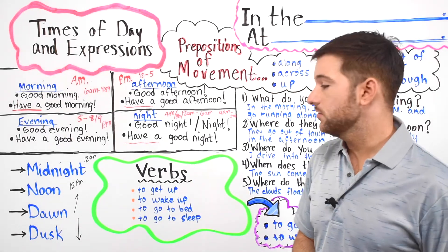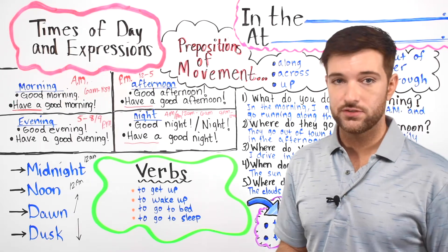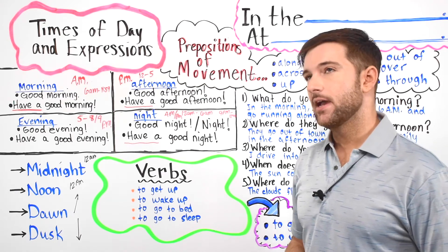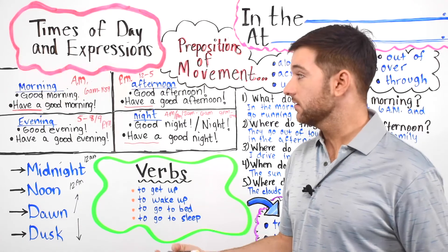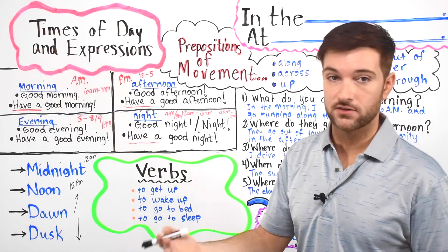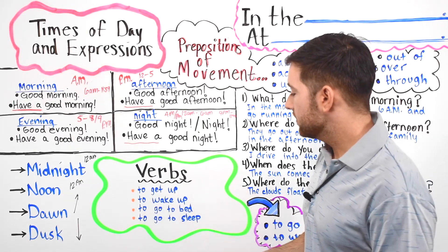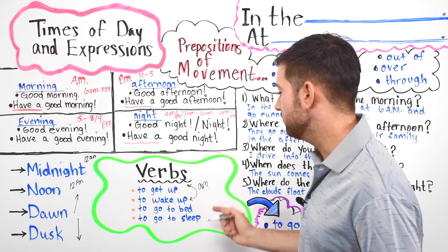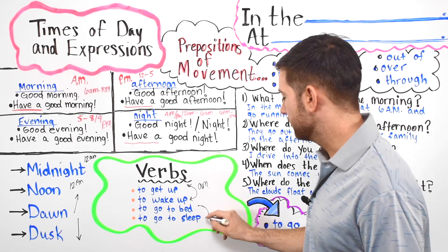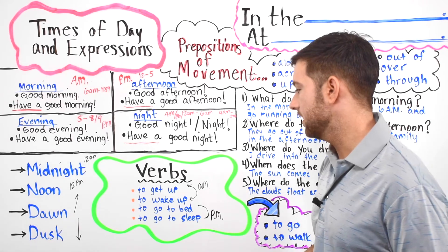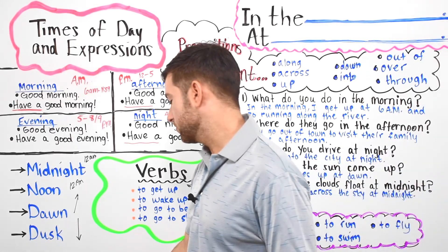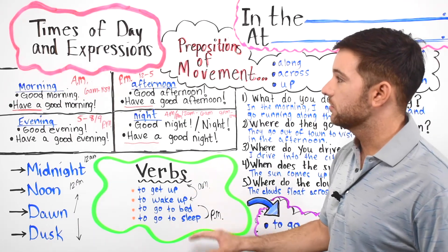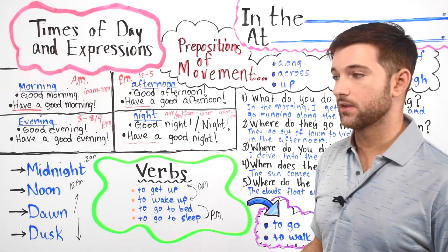Now I want to show you some new verbs for different times of the day as part of your daily routine. The first one is 'to get up' — you get up in the morning. Another way to say this is 'to wake up.' To get up and to wake up are pretty similar. Then we have 'to go to bed' or 'to go to sleep,' which you do at night. You get up and wake up in the morning, go to school or work, then come home and go to bed.